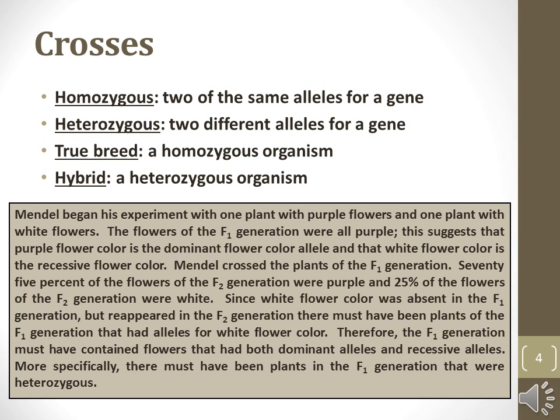Mendel's experiments determined organisms may be homozygous, which means they carried the same genetic sequence on both homologous genes, while heterozygous refers to possessing two different genes at the same genetic locus. True breeds of organisms have much of the genetic diversity bred out, which results in a high frequency of homozygosity.